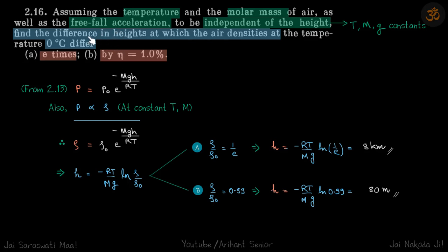We are to find at what height the air density varies by e times and varies by one percent. So we have some density at the surface of the earth, and as you go up the density will reduce.